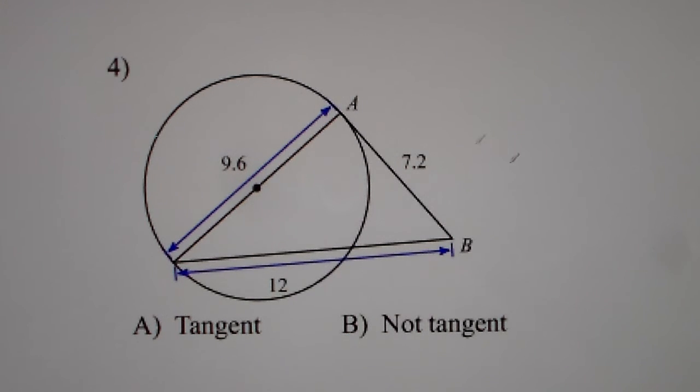Number 4. In our scenario, this is our right angle that we're trying to find. We want to see if that line AB is tangent to the circle. So this is going to be 7.2 squared plus 9.6 squared. We want to see if that's equal to 12 squared.